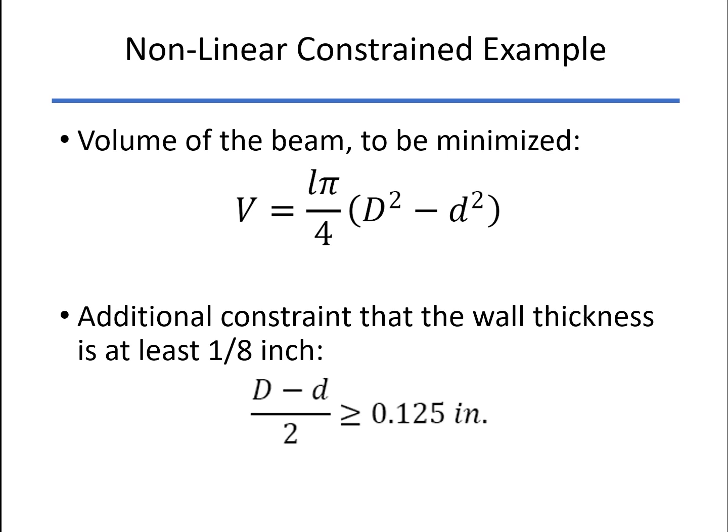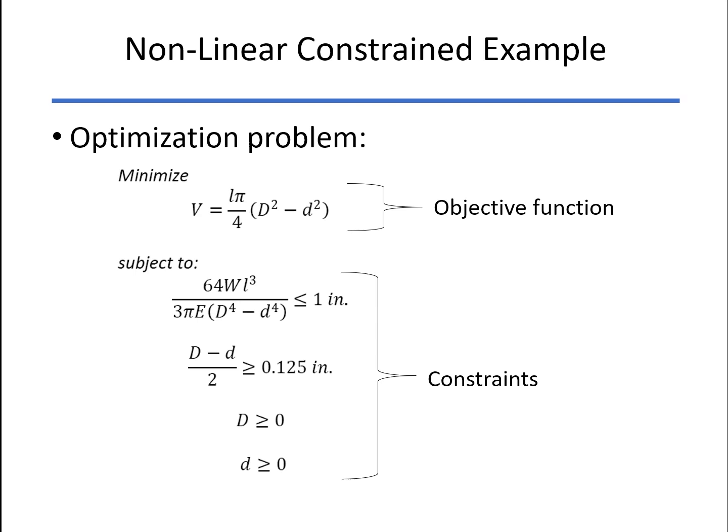That will make it easier to find tubes that are already made to standard dimensions as well. So here's how we set up our optimization problem. We want to minimize the volume subject to these constraints. Deflection less than or equal to an inch.